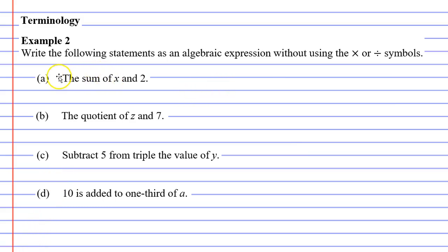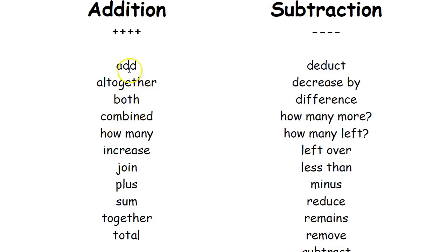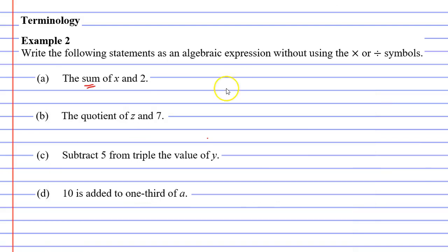We'll start with question A. It says the sum of x and 2 and the keyword here is sum. What does this word mean? I've attached a PDF to help you with this. It gives a list of words and what operation they represent. So we can see sum here and it represents addition. So this means to add x and 2. We'll write that as x plus 2.